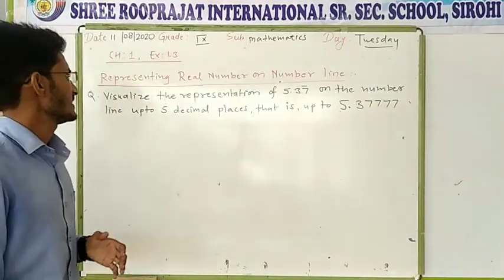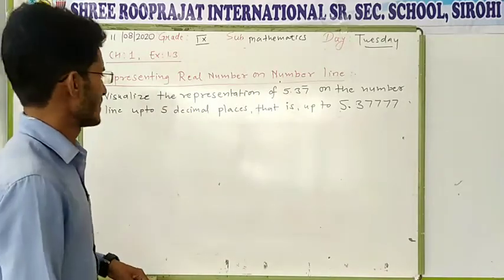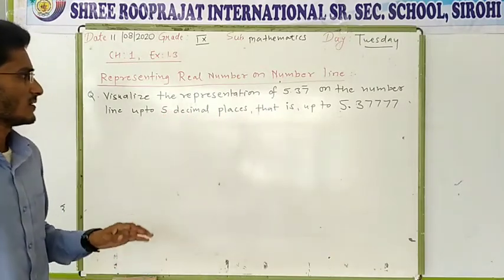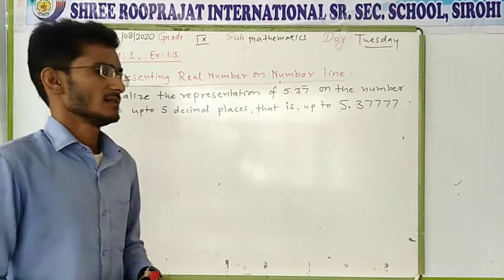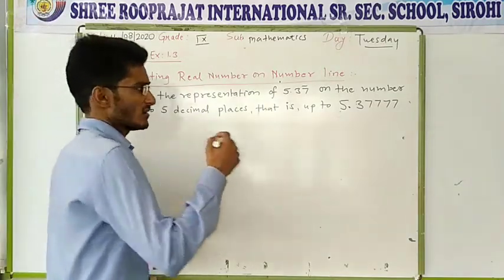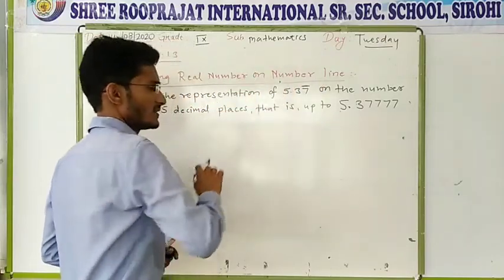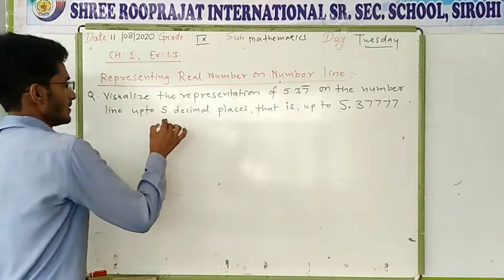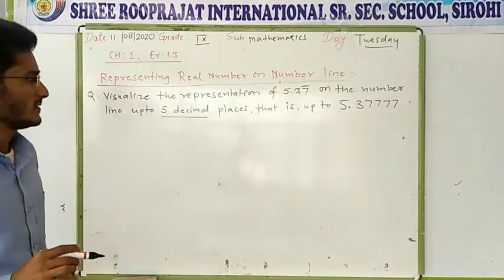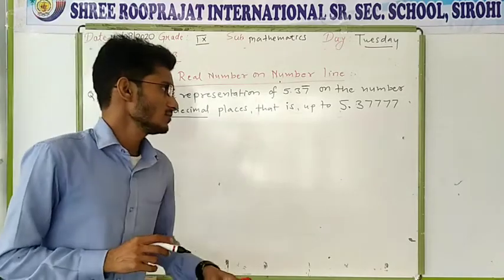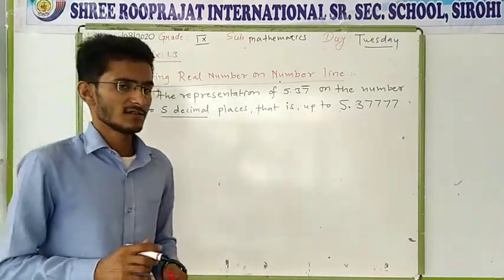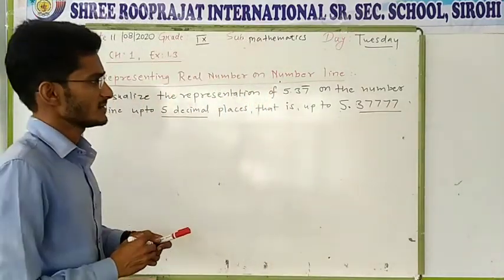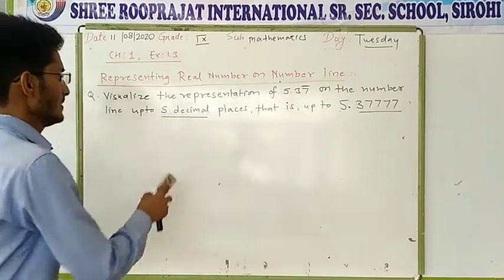Next one is representing a real number on a number line. If we go by the example: visualize the representation of 5 decimal 37 bar — this bar is only above the 7, not above 3. That means 7 will repeat. On the number line we have to mark the number up to 5 decimal places, that is 5 decimal 3, 7, 7, 7, 7. After the decimal there are 5 digits. So now we have to represent the number 5.37777 on a number line.